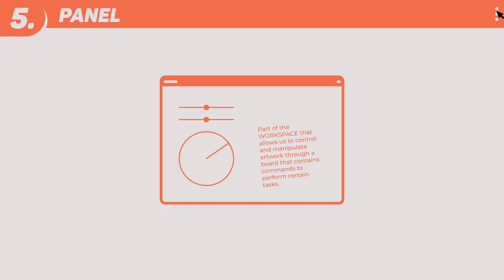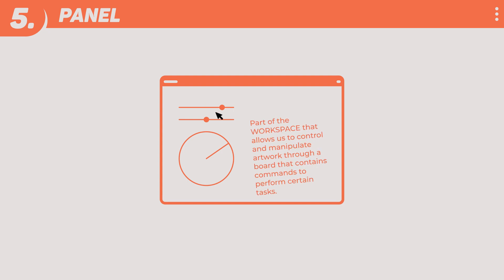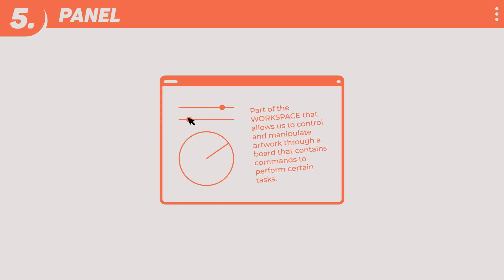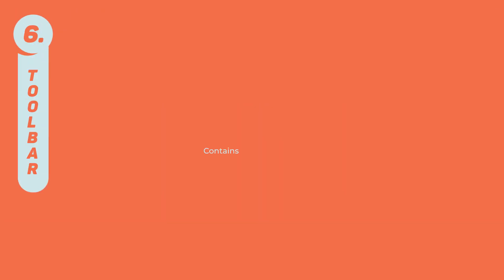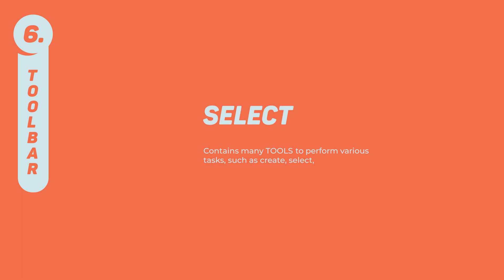Panel — part of the workspace that allows us to control and manipulate artwork through a board that contains commands to perform certain tasks. Toolbar — contains many tools to perform various tasks, such as create, select, and manipulate objects.